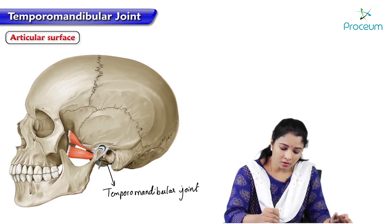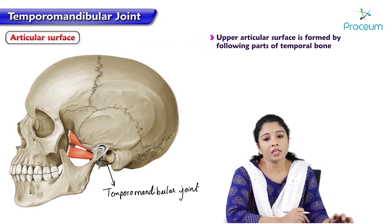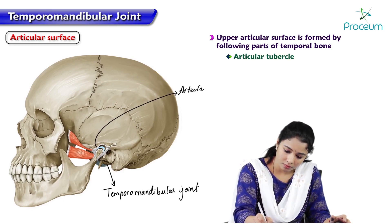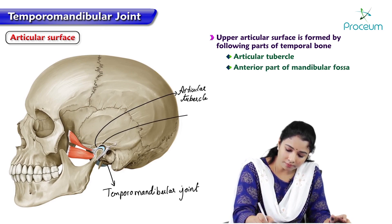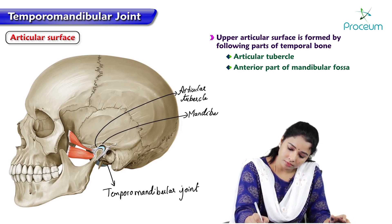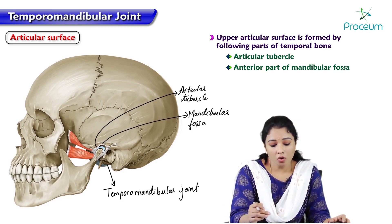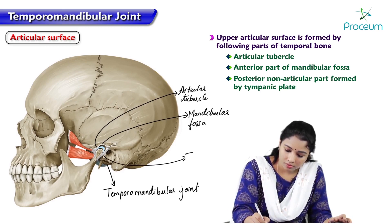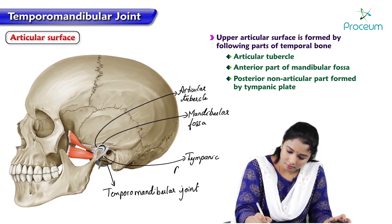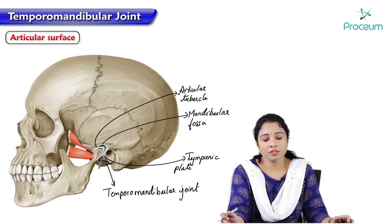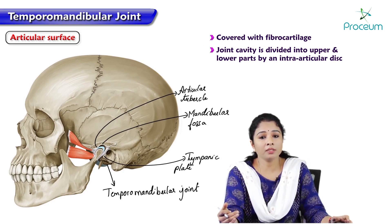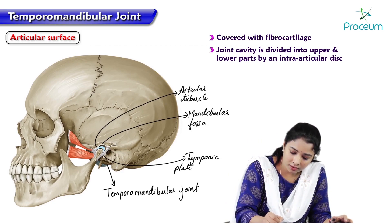The upper or superior articular surface is formed by the articular tubercle and the mandibular fossa. The posterior nonarticular part is formed by the tympanic plate. The articular surfaces are covered by a fibrocartilaginous layer, and the joint cavity is divided into upper and lower compartments by an intraarticular disc — seen here as the blue colored disc.